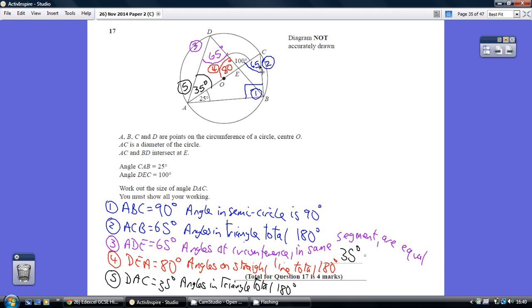If that's 90, then this angle here must be 65, because angles in a triangle add up to 180. So that's how we know this angle here is 65.